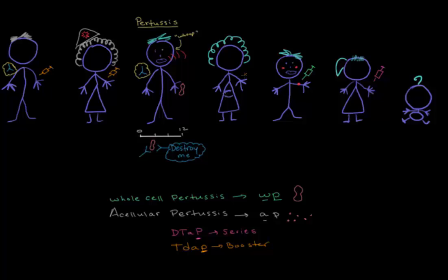Lastly, expecting moms at 27 to 36 weeks of each of their pregnancies should get the Tdap, because the antibodies that mom produces in response can be passed along to the baby. Then when the baby is born, the baby will have some protective passive immunity to pertussis until he or she can receive the first pertussis vaccine at two months.